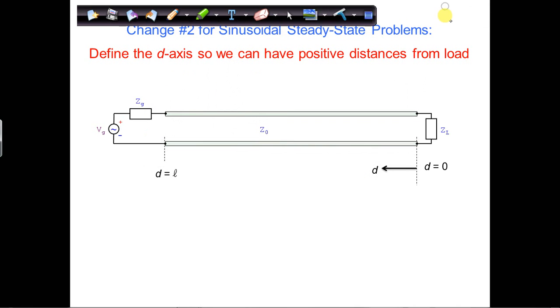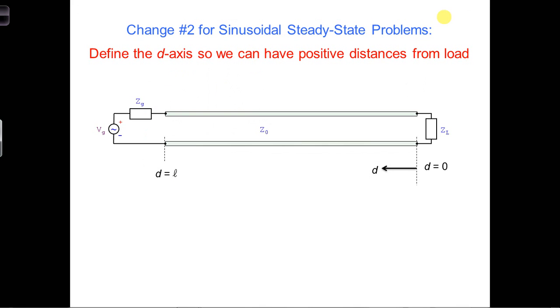What we can do is reverse the direction of our coordinates so that we have positive distances along the transmission line from the load towards the generator.